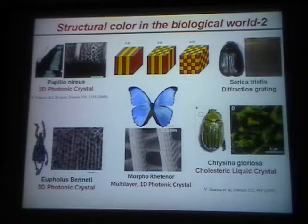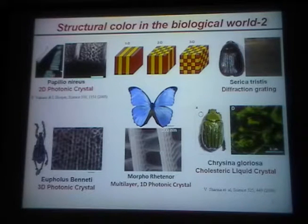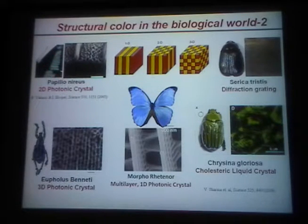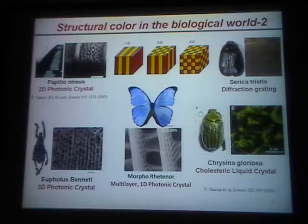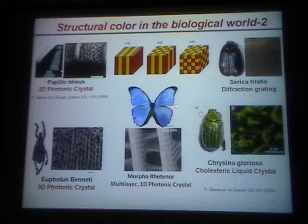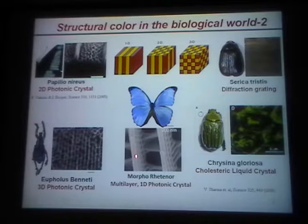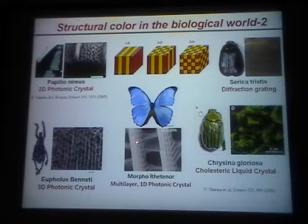If you look in the biological world, there are very many interesting objects that produce interesting colors. This is taken from Pete Vukusic's work — it's a 2D photonic crystal with structural colors. This particular one has a fluorescent dye which emits, and because there is a two-dimensional photonic bandgap, the fluorescent emission is sent in the forward direction. You can think of the morpho as a one-dimensional crystal — there are many varieties, many are blue, and the essential idea is the color is produced by structural variation.